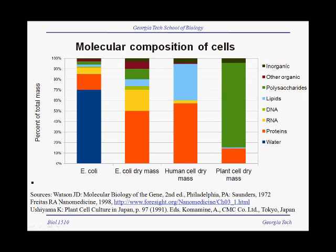If we look at what kinds of molecules are in cells, starting with E. coli on the left, we see that the bulk of what's in a cell — and E. coli is typical — is water. But if we take out the water and look at everything else in a cell, we get what we call the dry mass, which is sometimes also equivalent to the biomass.